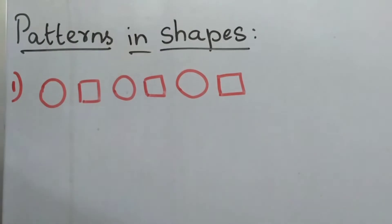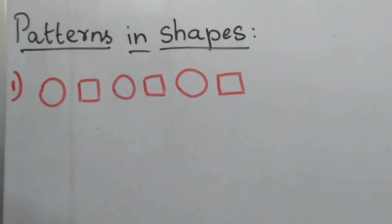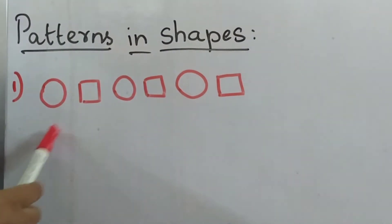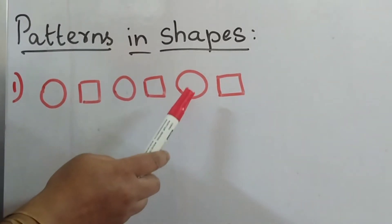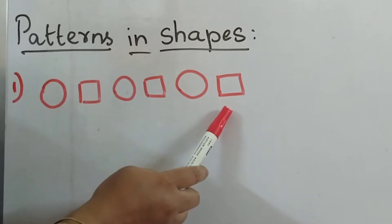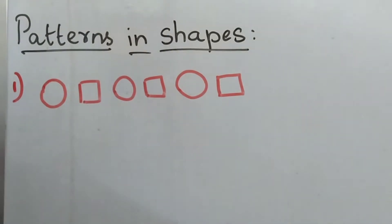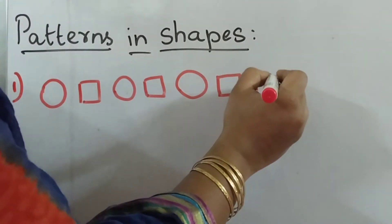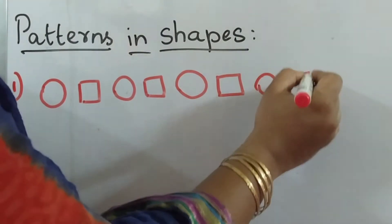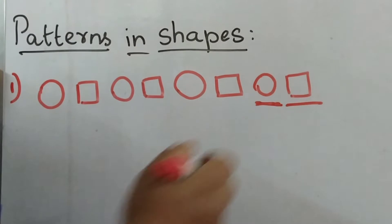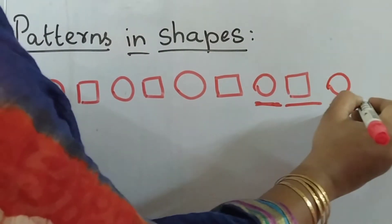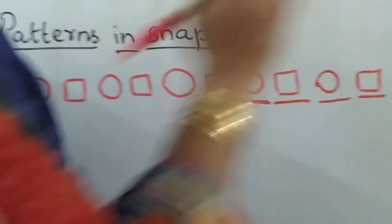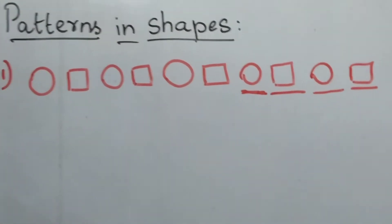Children, look at this pattern. Circle, square. Again, circle, square. Then circle, square. What will be the next pattern, children? Yes — circle, square. Again circle, square, and it moves on.